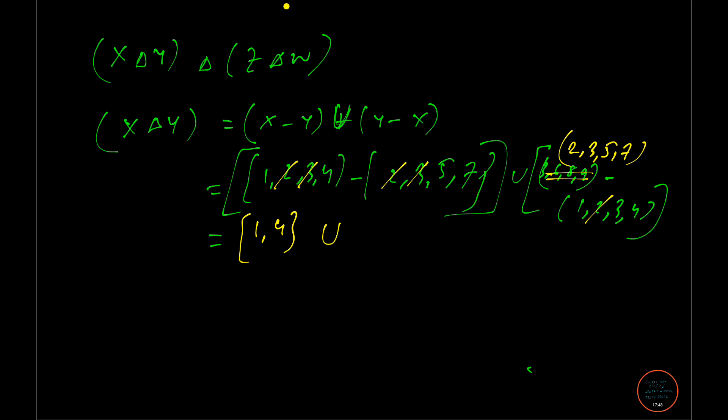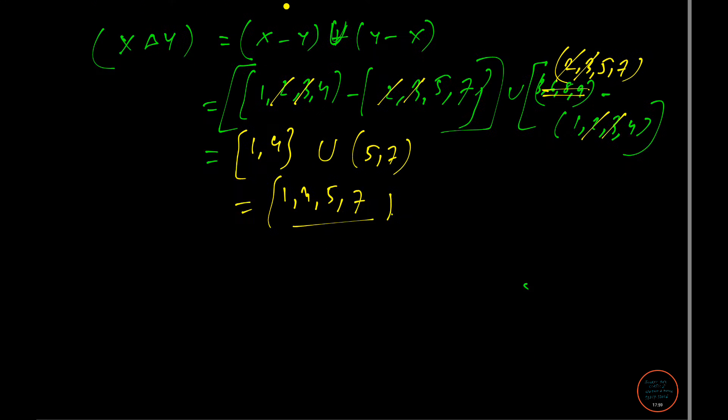Ultimately it is 1, 4, 5, 7. So it is 1, 4, 5, 7. Now similarly Z delta W is Z minus W.